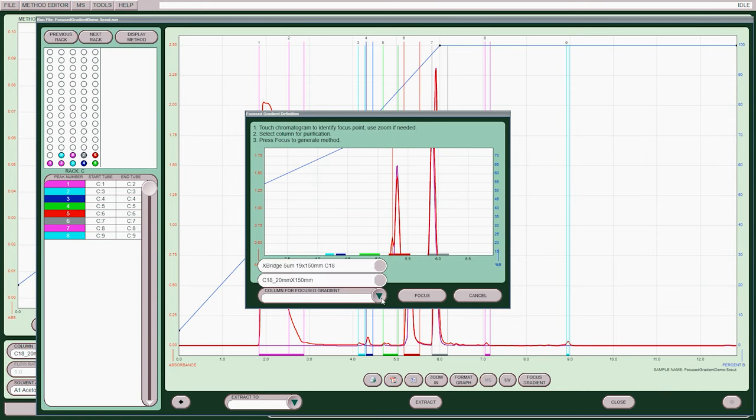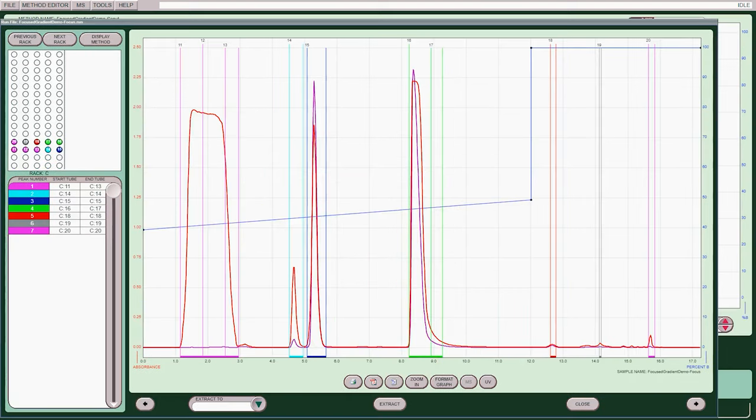Once the peak is selected, choose a matching column for purification and press the Focus button on that second screen. The Acuprep automatically generates a focus gradient centered on the selected peak.